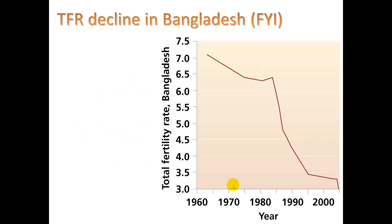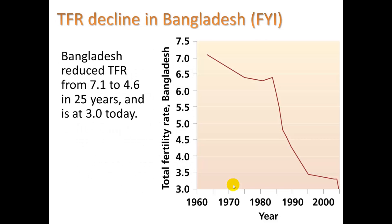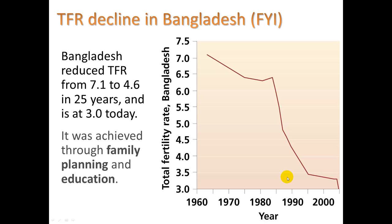The TFR decline in Bangladesh is a good example. Bangladesh reduced their TFR from 7.1 to 4.6 in 25 years, and it is at 3.0 today — a drastic drop from 1960 to 2010. What's responsible? Two things: family planning and education, both of which have been shown repeatedly to lower birth rates.